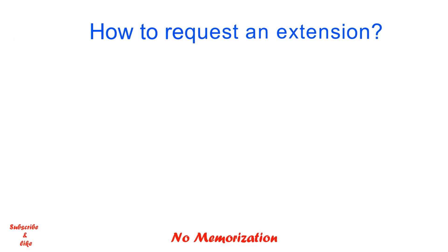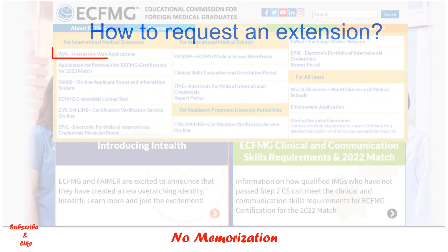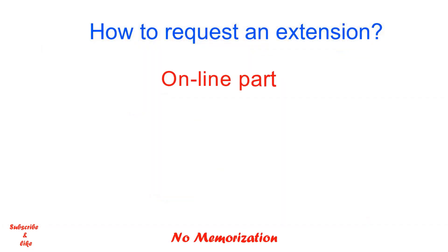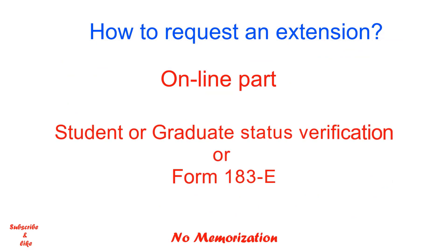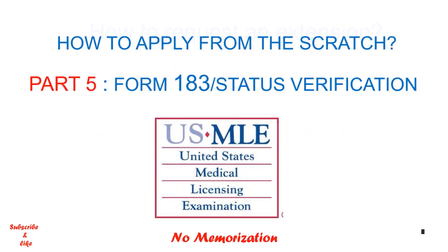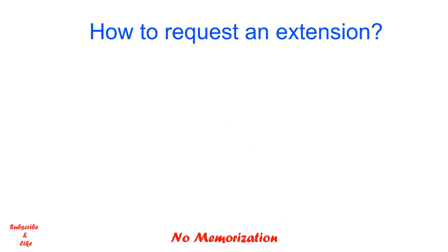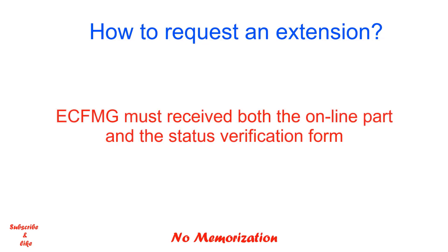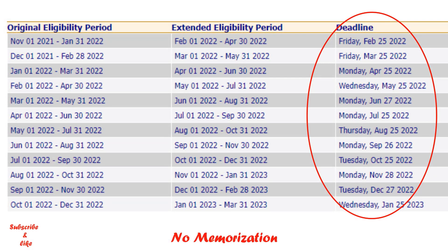How can you request an extension? You can do it through the Interactive Web Application. It has two parts: the online part and the student or graduate status verification form, known as Form 183E. Please keep in mind that ECFMG must receive both the online part and the certification statement form in order to process your request. The processing must be completed by the published deadline or it will be rejected.